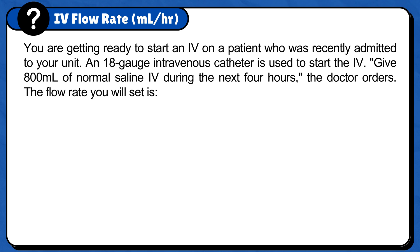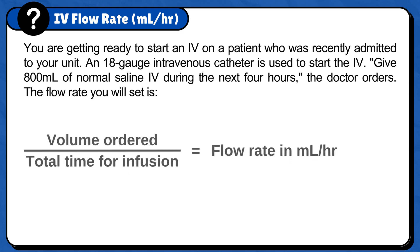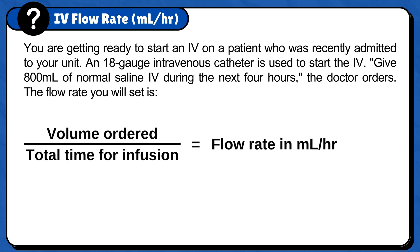The flow rate you set is determined as follows. First, set up the IV flow rate formula: volume ordered over total time for infusion equals flow rate in milliliters per hour.